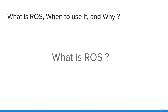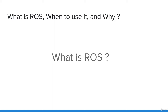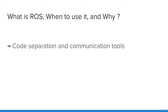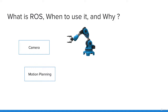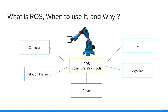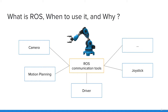Now, what is ROS? It would be hard to describe exactly what ROS is in two minutes, or even an hour, but here are two main points that will give you a big picture. First of all, ROS provides you with a way of separating your code into reusable blocks, along with a set of communication tools to easily communicate between all your subprograms. For example, if you are programming a robotic arm, you can create a subprogram — called a node — for your camera, another for motion planning, another for the hardware driver, another for the joystick, and so on.